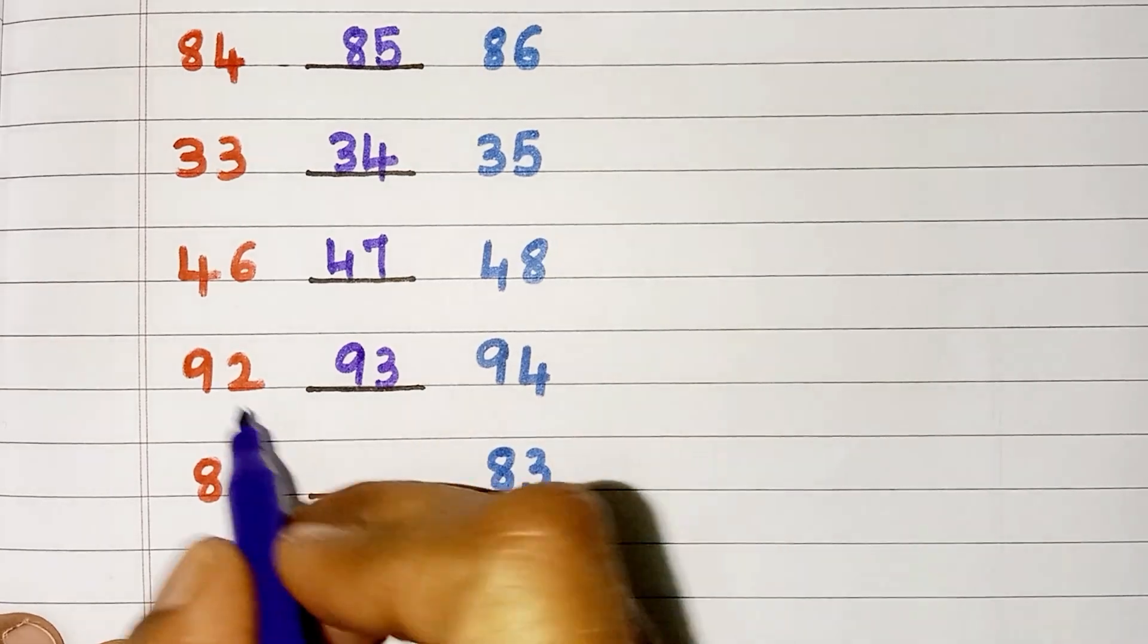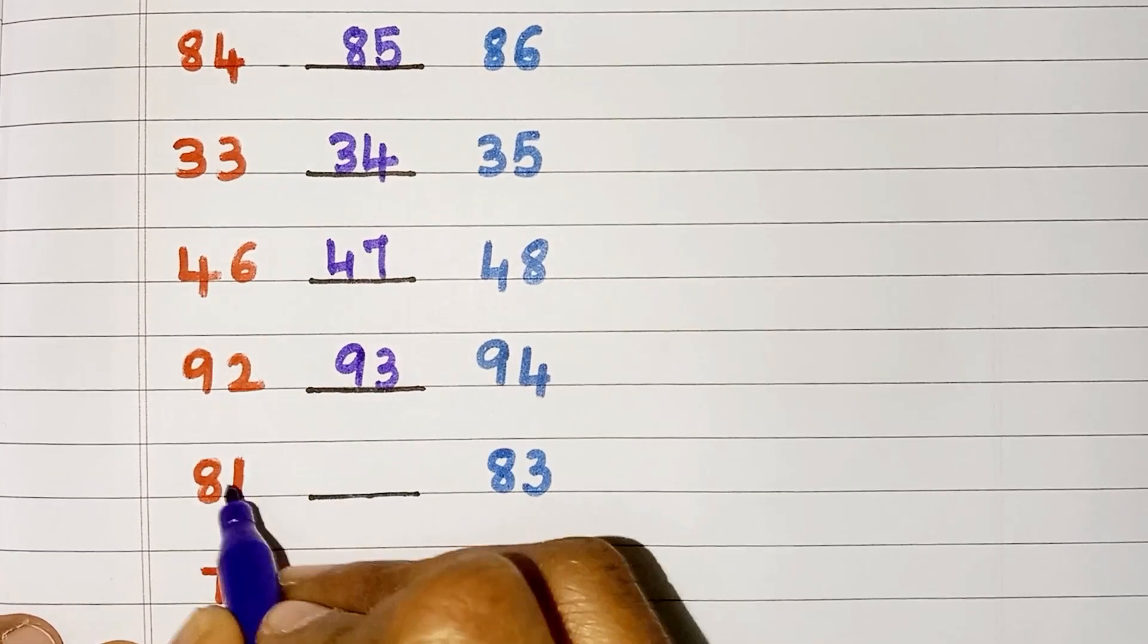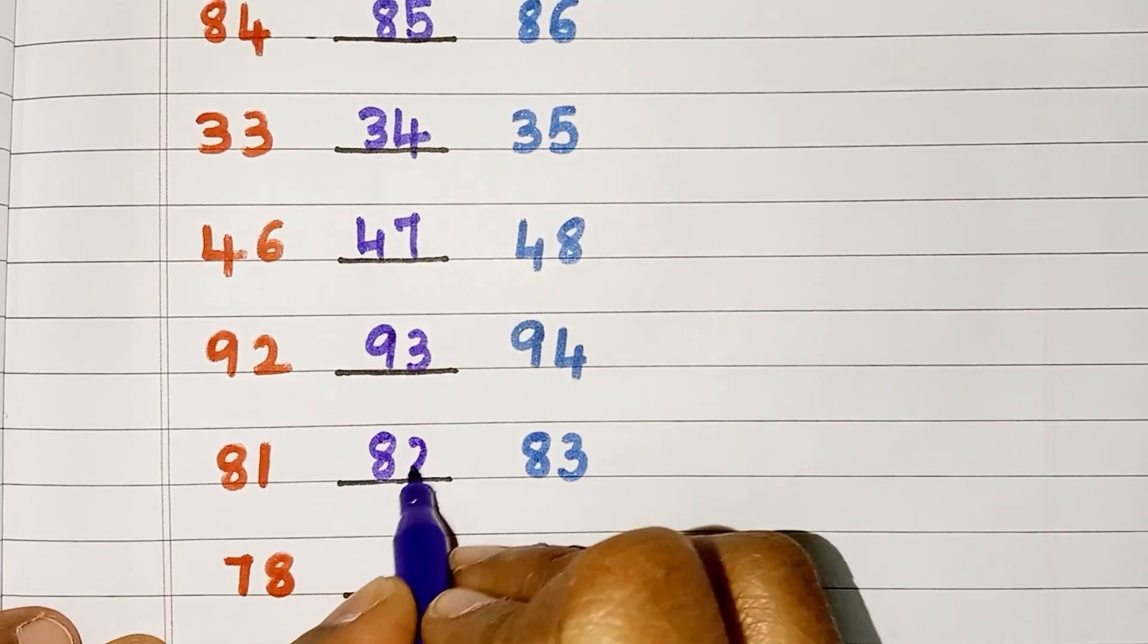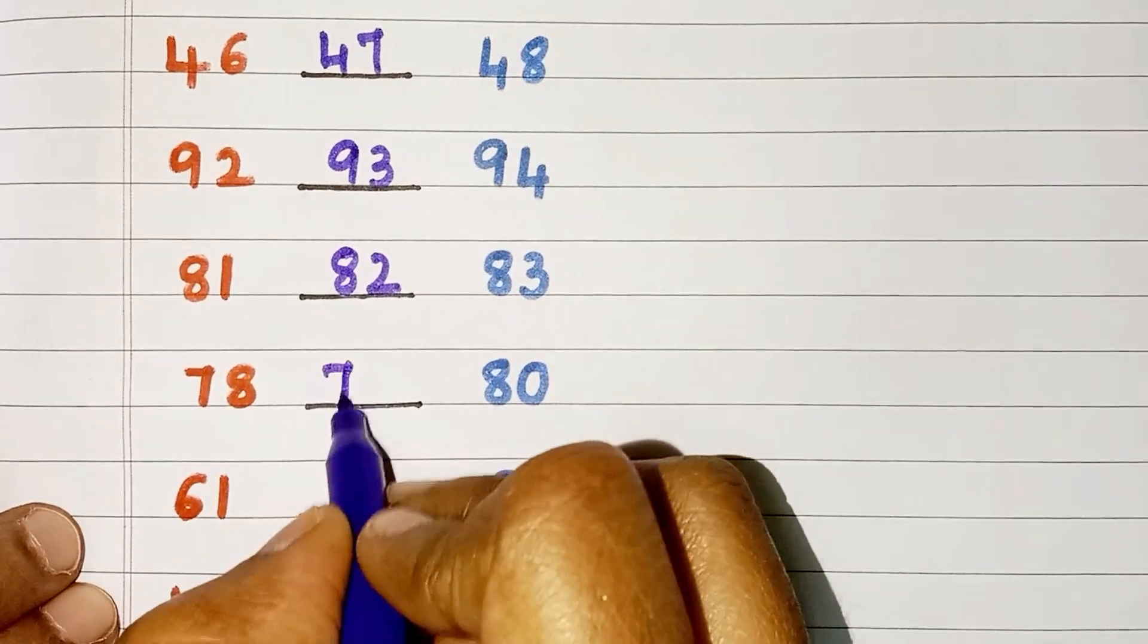So, what comes between 92 and 94? It is 93. Between 81 and 83 it is 82.